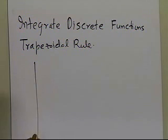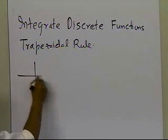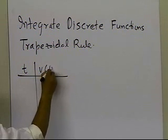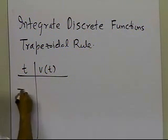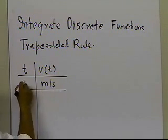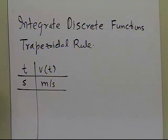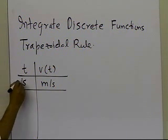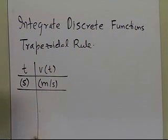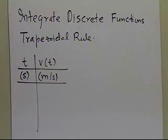In order to illustrate this, we're going to take an example. Let's suppose somebody gives us the velocity of a body — in this case a rocket — at different times, with units of time being seconds and units of velocity being meters per second, and let's suppose you are given these values of the velocity at different times.